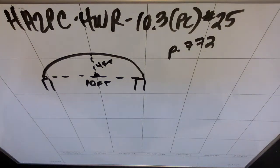This is honors algebra 2 pre-calculus. We're doing homework review of 10.3 in pre-calc, number 25 on page 772. This is another architecture word problem.